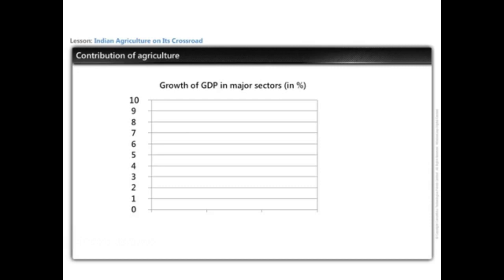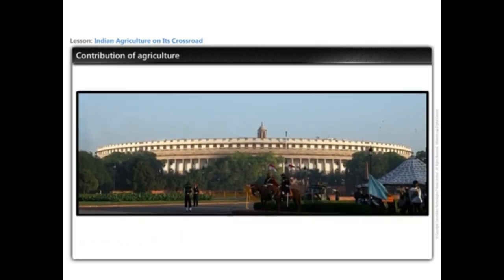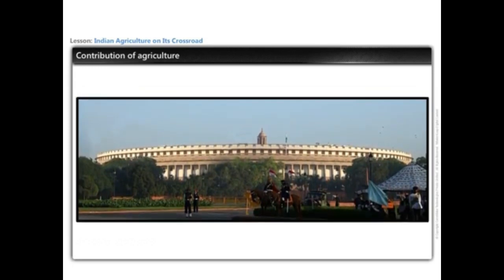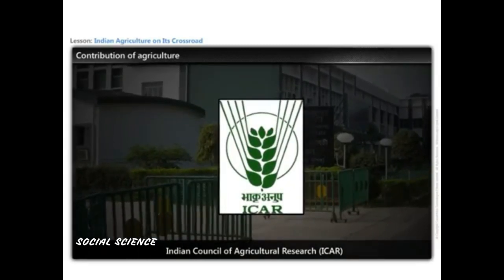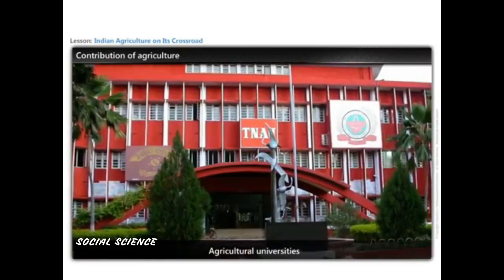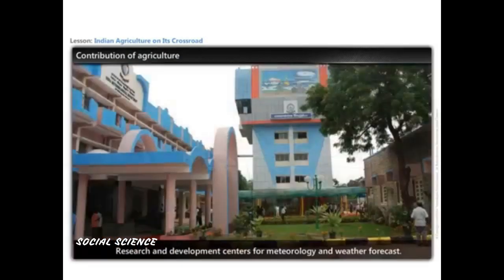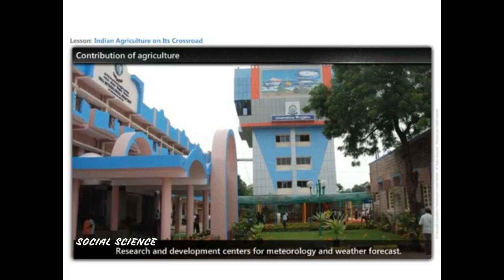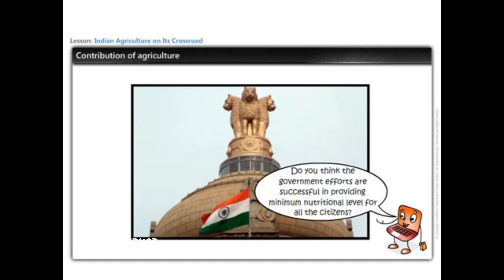GDP growth rate in the agricultural sector is much lower than other sectors. Considering the importance of agriculture, the government of India has established institutions to modernize agriculture, including the Indian Council of Agricultural Research (ICAR), agricultural universities, veterinary services and animal breeding centers, and research and development centers for meteorology and weather forecast. Despite these efforts, over 225 million Indians remain chronically undernourished.